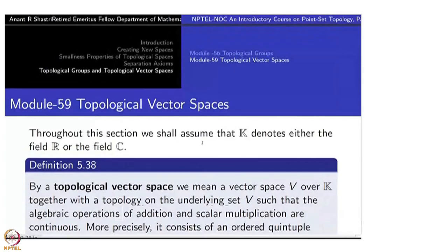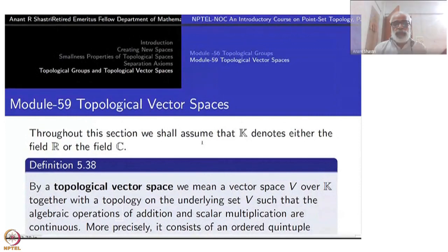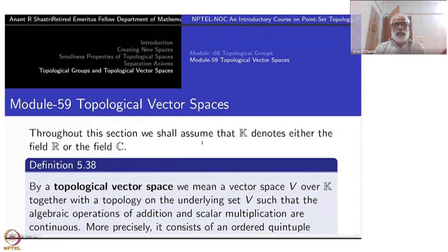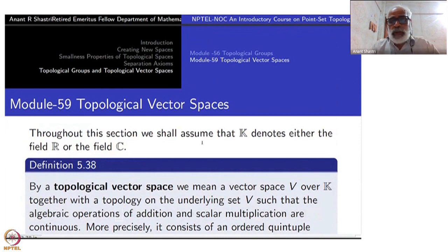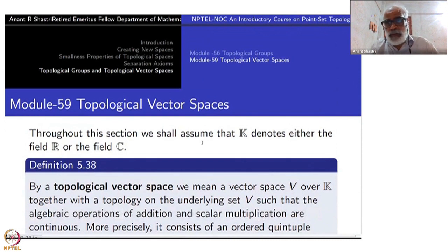Welcome to Module 59: Topological Vector Spaces. Throughout this section we shall assume that k denotes either the real field or the complex numbers field ℂ. By topological vector space we mean a vector space V over k together with a topology on the underlying set V such that the algebraic operations of addition and scalar multiplication are continuous. This is not yet a definition; I will give you a precise definition in a moment.